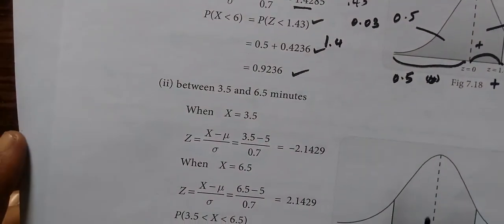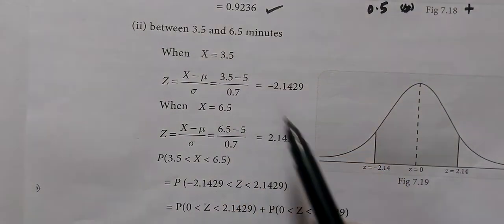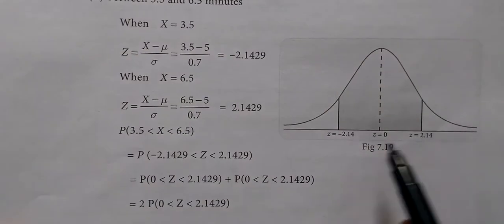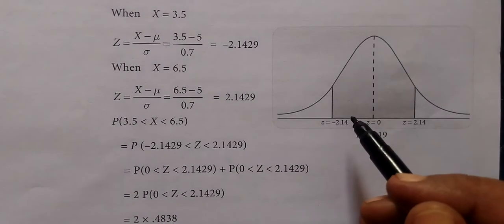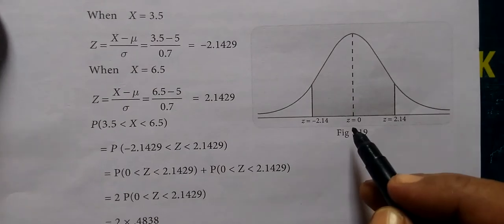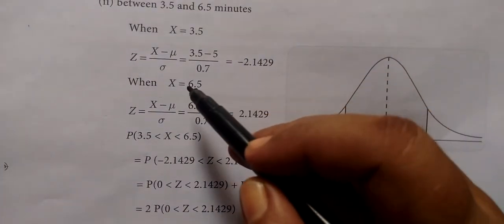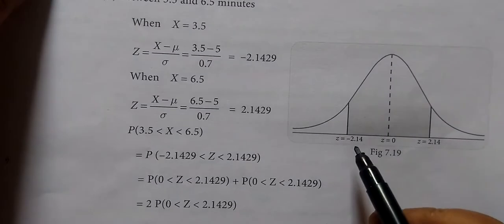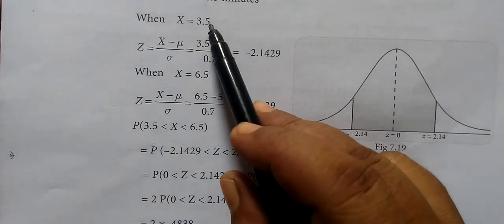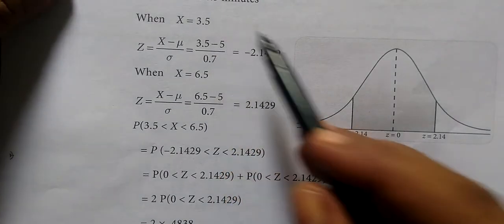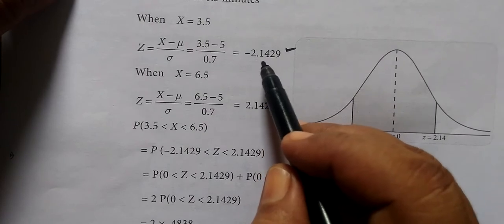Next, between 3.5 and 6.5 minutes. For this, we need to find the difference. First, we have to mark Z values on the normal curve. We have to mark X values to find Z. Then Z = (X - μ) / σ.